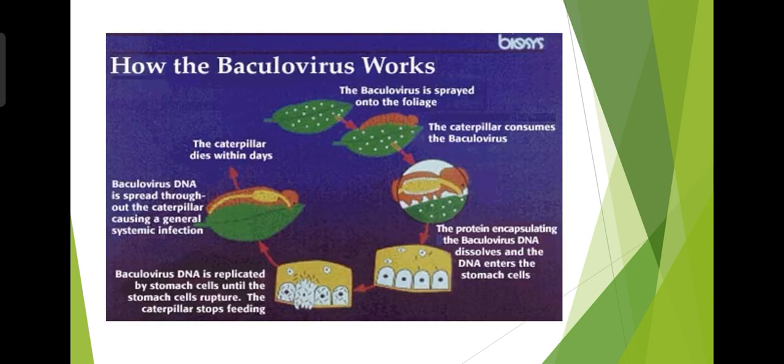How baculoviruses work can be seen in the picture. The baculovirus is sprayed onto the foliage; the caterpillar consumes it and the protein encapsulating the baculovirus DNA dissolves. The DNA enters the gut cells of the caterpillar, is replicated inside the gut, and the gut wall or cuticle gets ruptured as described. The caterpillar stops feeding and eventually dies.